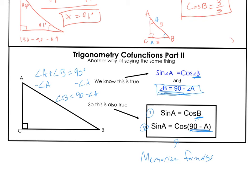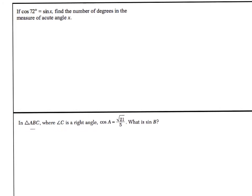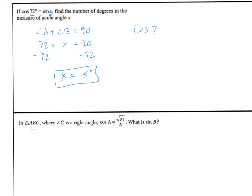These formulas look tough, but we're going to do four application problems. First: if cosine of 72 is equal to the sine of X, find the measure of acute angle X. We know angle A plus angle B equals 90. The first angle is 72, the second is X, so 72 plus X equals 90. Subtract 72 from both sides: X equals 18 degrees. Since 18 plus 72 equals 90, the cosine of 72 equals the sine of 18. They're complementary.